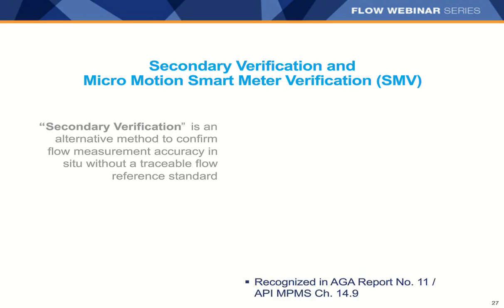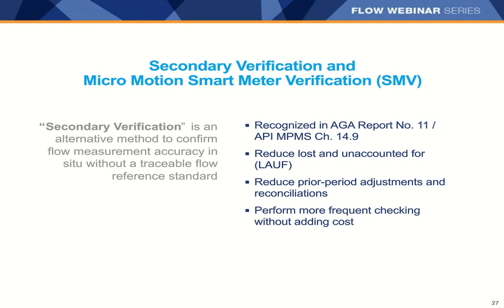AGA11 acknowledges that valid secondary verification methods may be used to bolster measurement confidence of Coriolis meters in natural gas applications. Smart meter verification is a low-cost in-situ method — no flow interruption, no need to take the meter out of service and send it back for recalibration. Most likely you'll get back an 'as-left, as-found' result, indicating the issue was inside the process rather than the meter. The inspection report can be printed from ProLink 3 or AMS for quality records.